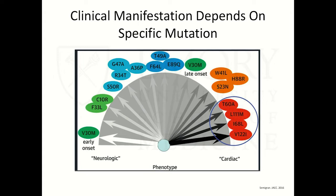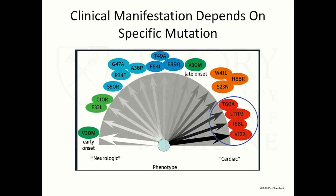The VAL30M is the most common mutation worldwide. It is more of a polyneuropathy with very little cardiac involvement; patients who do have cardiac involvement may display some conduction problems or AV nodal dysfunction. The endemic areas for VAL30M are Portugal, Brazil, Japan, and Sweden. The VAL122 ILE is the most common mutation in the United States, prevalent in the African-American population. These patients develop heart failure at a younger age than the wild-type group and are almost never associated with neuropathy other than bilateral carpal tunnel.